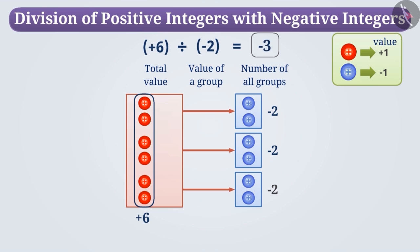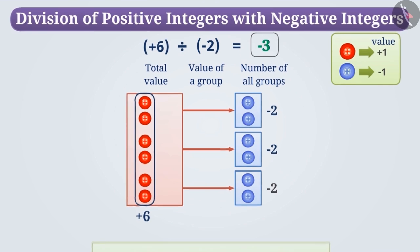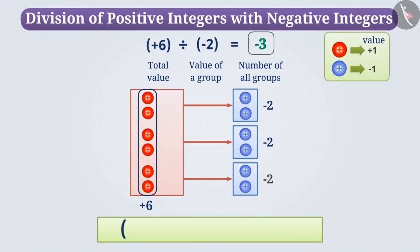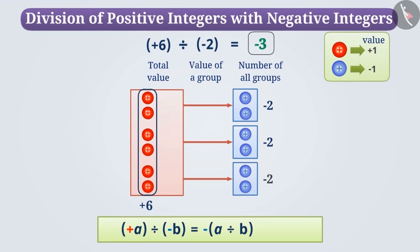Here, the 3 shows three groups and the minus sign shows the action of subtraction. In broad terms, we can say that the quotient obtained by dividing a positive integer by a negative integer is negative. Your divisor cannot be zero.